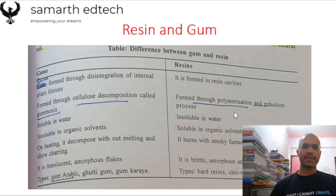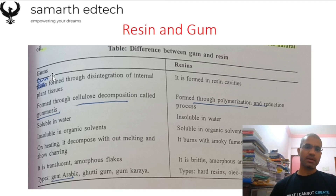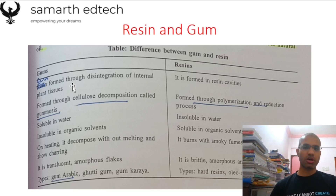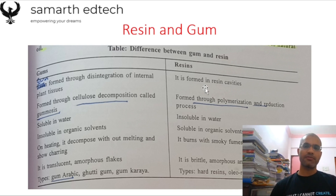The next topic is the difference between resin and gum, which has been asked in UPSC. Both are non-timber forest produce. Gum is formed through the disintegration of internal plant tissues — a process called gummosis. Resin is formed in resin cavities present in the stem of a tree, where resin gets deposited.